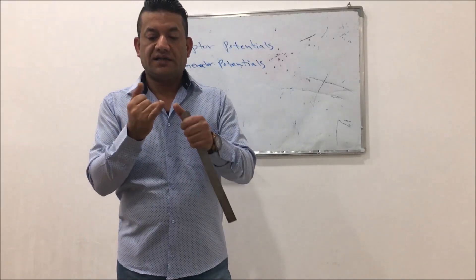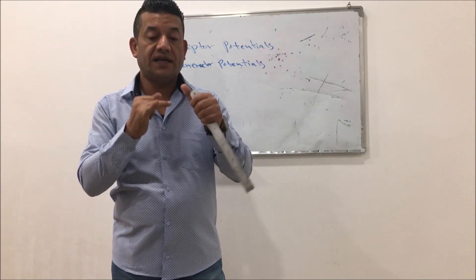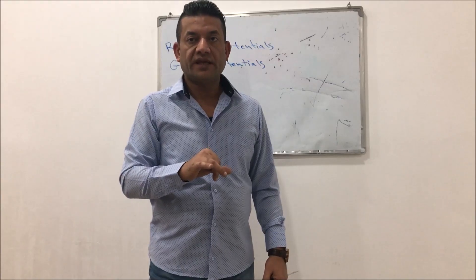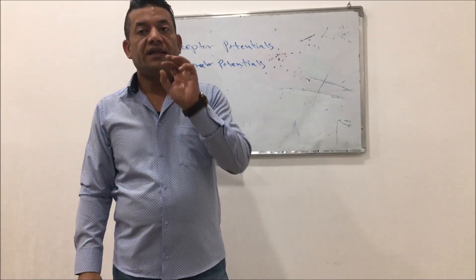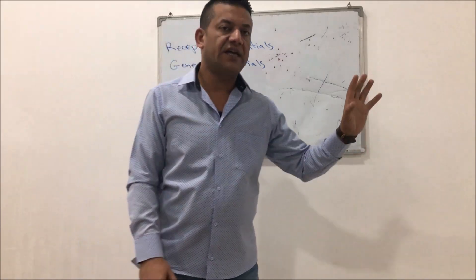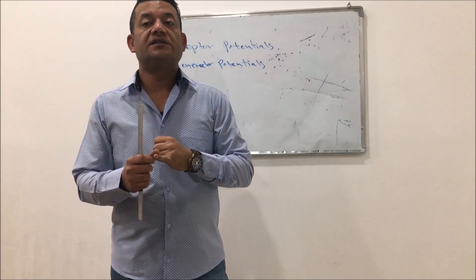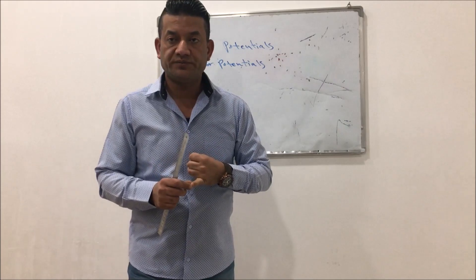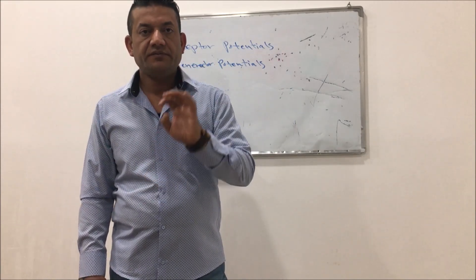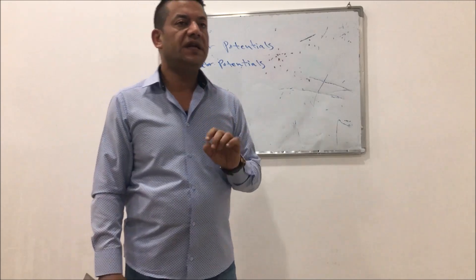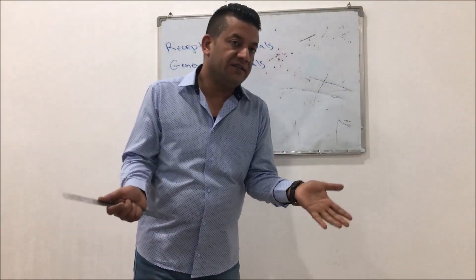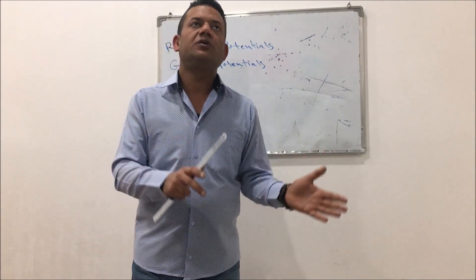These potentials are graded, non-propagated, and do not obey the all-or-none law. In contrast, action potentials are propagated — they travel throughout the axons — and must obey the all-or-none law. If the stimulus is not adequate, action potentials cannot be generated. This is the all-or-none law.